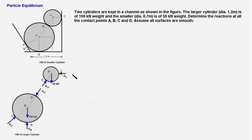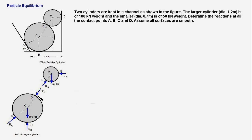Notice that the smaller cylinder is touching the vertical wall, and therefore the reaction force acting on the cylinder is towards the left and is horizontal. The weight of 50 kN acts at the center of the cylinder. The contact force RD between the two cylinders is pointing towards the center, and the force of the same magnitude is also acting on the larger cylinder at point D. The line of action of both these contact forces is the same and passes through the centers of both the cylinders.